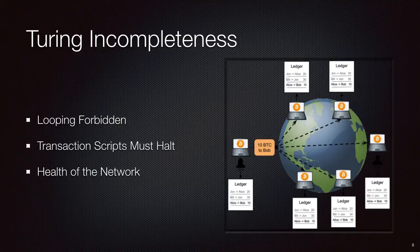Now there are other blockchains out there that do permit Turing completeness — right now there's Ethereum and Eris Industries, as well as a number of other ones. They have different designs that allow for Turing completeness, and they are aware of and sensitive to the potential for infinite looping, with different ideas of how to overcome these challenges.